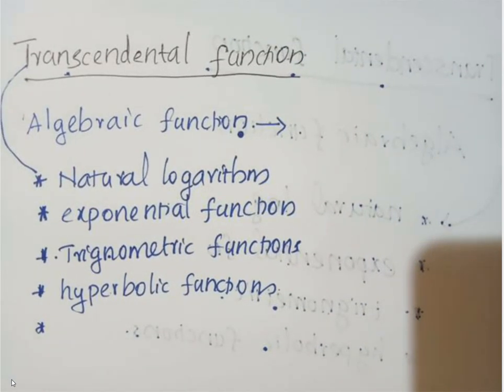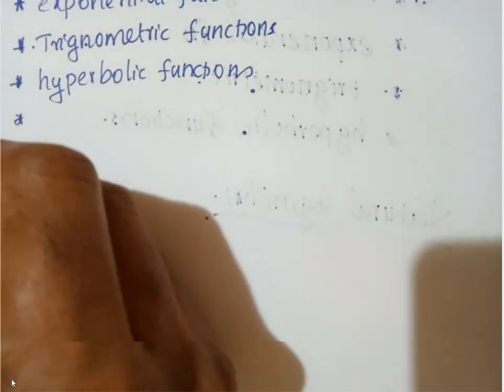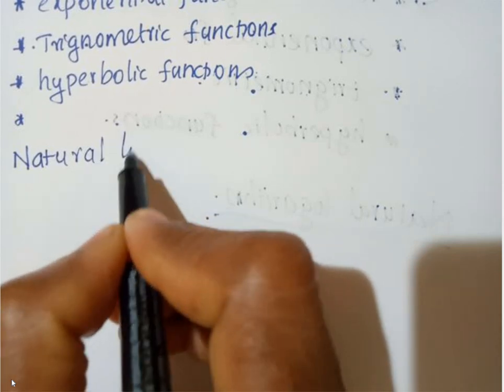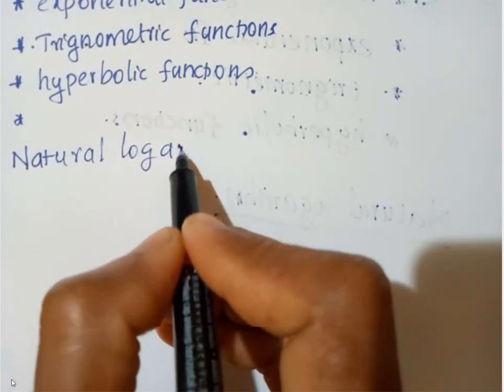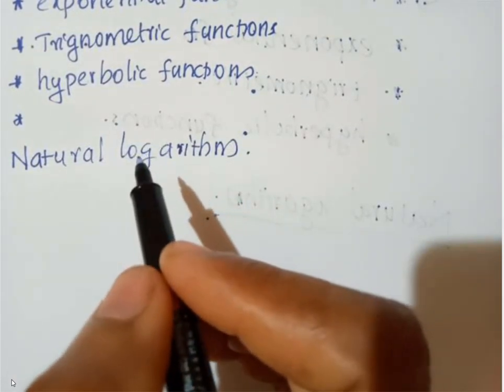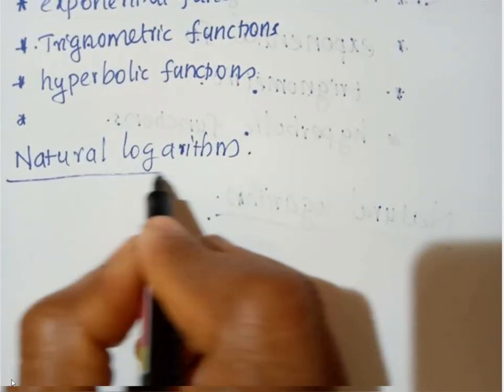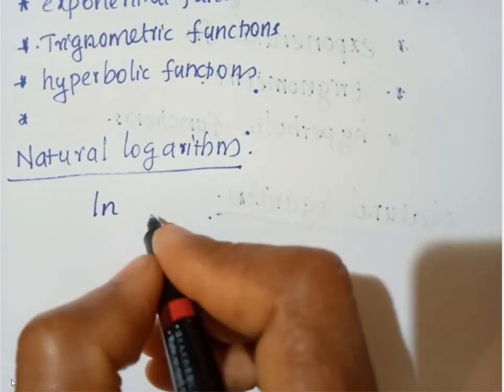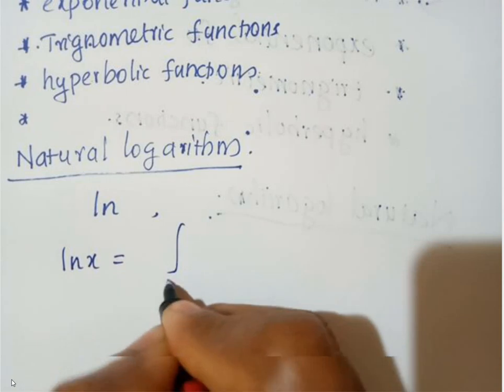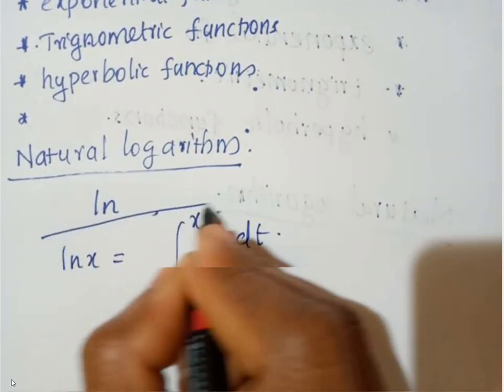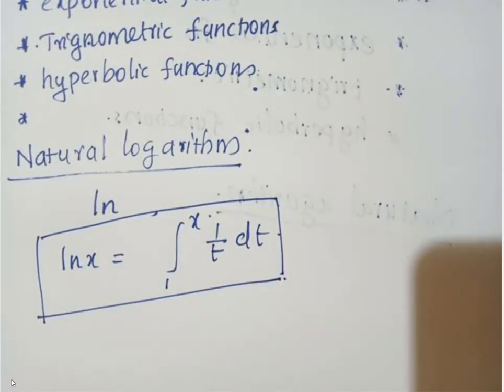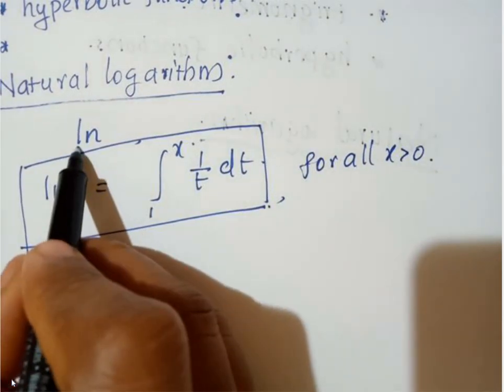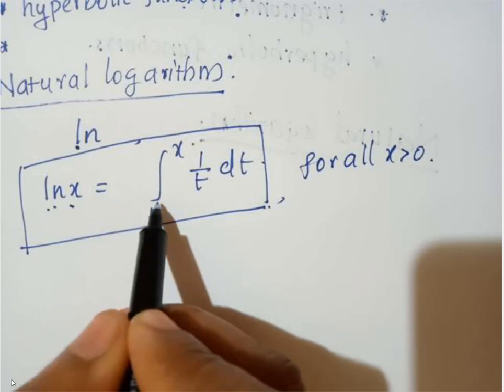We are going to study the first one, natural logarithm. Natural logarithm is denoted by ln and is defined by ln x equal to integral 1 to x, 1 by t dt. This is the definition for all x greater than 0. This is the notation and definition: ln x equals integral from 1 to x, 1 by t dt.